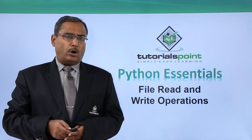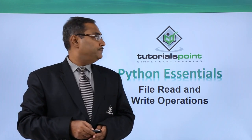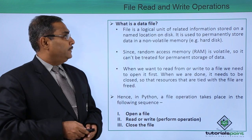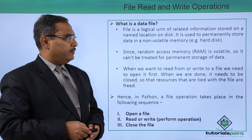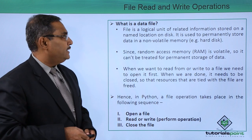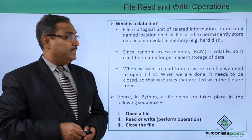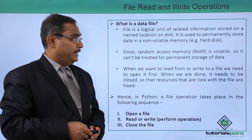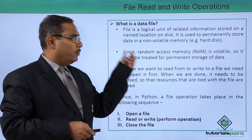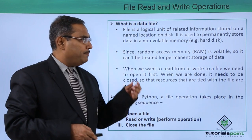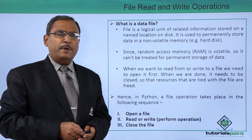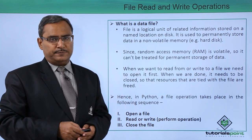File read and write operations. What is a data file? A file is a logical unit of related information stored on a named location on disk. It is used to permanently store data in a non-volatile memory — for example, a hard disk. We can keep our data in different data types.